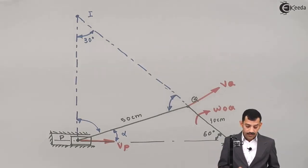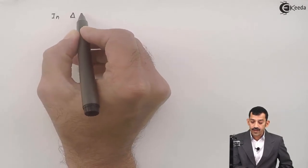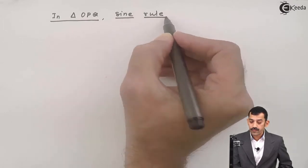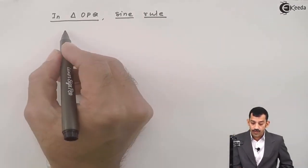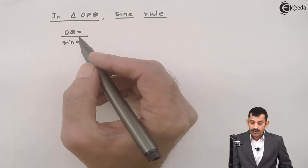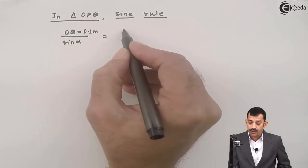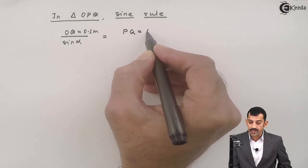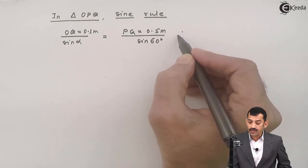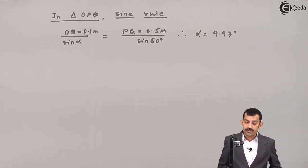In triangle OPQ, applying the sine rule: we're interested in angle alpha. OQ divided by sine of alpha, where OQ = 10 cm = 0.1 m, equals PQ divided by sine of its opposite angle. PQ = 50 cm = 0.5 m, divided by sine of 60 degrees. From this, angle alpha comes out to be 9.97 degrees.